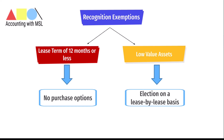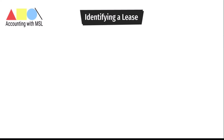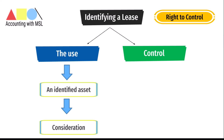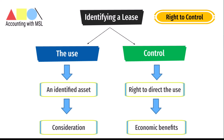How do we identify a lease in the first place? A contract is a lease or contains a lease if it conveys the right to control the use of an identified asset for a period of time in exchange for consideration. Control is conveyed when the customer has both the right to direct the identified asset's use and to obtain substantially all the economic benefits from that use. Note that where a supplier has a substantive right of substitution throughout the period of use, the customer does not have a right to use an identified asset.